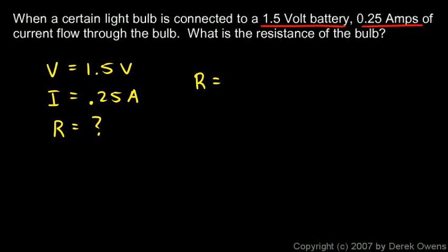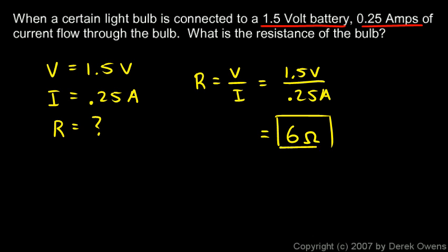So I'll use the equation in this form: R equals V over I. And I put in 1.5 volts and 0.25 amps. And I do the division. And it comes out to 6. And when you divide volts by amps, you get ohms. So this is 6 ohms. That's the resistance in this particular case.